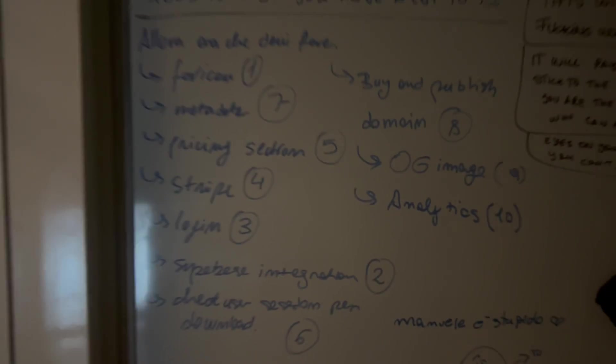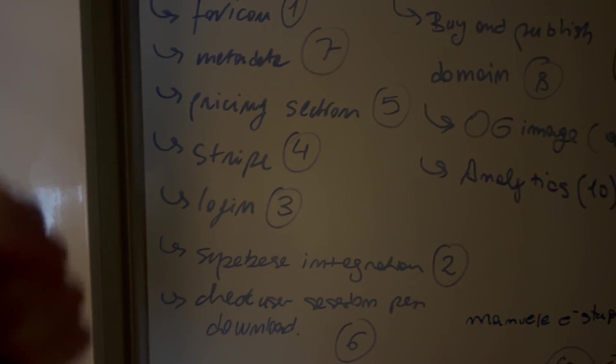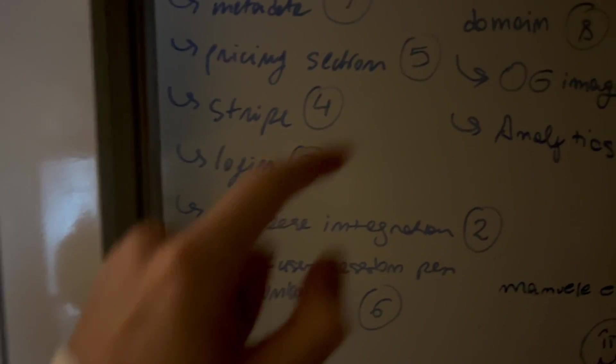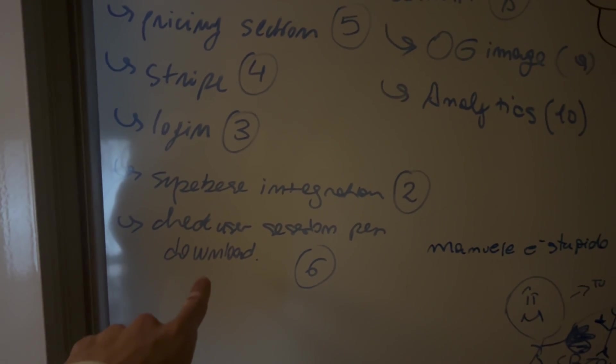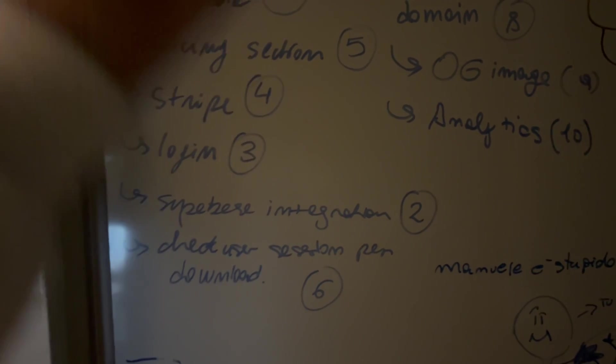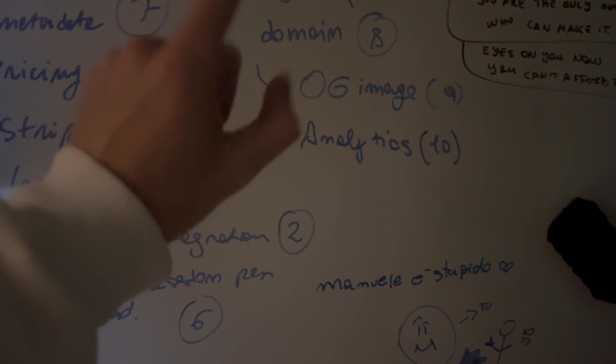I just wrote out the things that are still missing on the website — about 10 of them. I need to do the favicon (already done), compress the image, Supabase integration, login, Stripe, pricing section check, user session for the loads, metadata, body domain, OG image, and analytics. It's 2 AM — am I going to finish at 4 or 5 AM? I don't know.